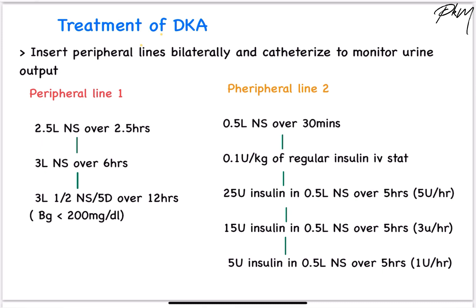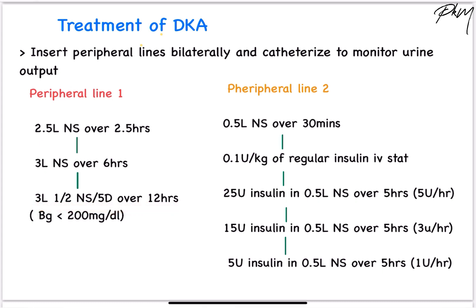Following which, give 3 litres of NS over 6 hours. Following that, give 3 litres of half normal saline or 5% dextrose over 12 hours. NS is changed to half NS or 5% dextrose when blood glucose level comes down to 200 mg per deciliter.